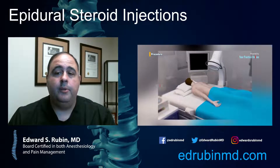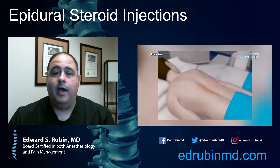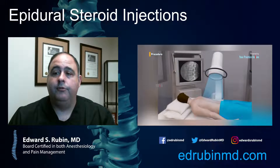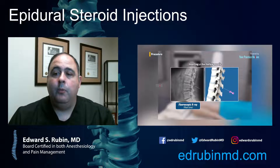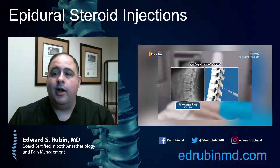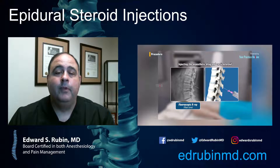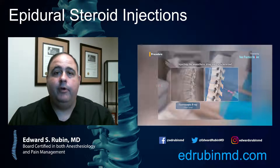On the day of the procedure, you come into a procedure room. Everything we do is done under fluoroscopic guidance, and we use sterile technique. After you're sterilized, a little bit of numbing is placed into the skin, and then an epidural needle is inserted down to the level of the epidural space. We're using live x-ray to guide that needle so we can see right where it's going. Once we're in the epidural space, we typically inject a little bit of contrast dye. The contrast lets us see the medicine spreading — because the steroid doesn't show up on x-ray, the contrast confirms the medicine is going where we want it before we commit to injecting the steroid.